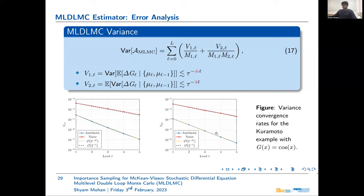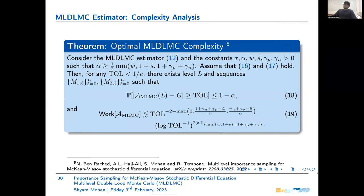We verify convergence rates for the Kuramoto example with smooth observable. The main finding is the difference in variance convergence between the antithetic and naive samplers. In the left plot for V1L, the antithetic sampler ensures one order faster convergence than the naive sampler. A very similar improvement of one order better convergence appears for V2L as well.